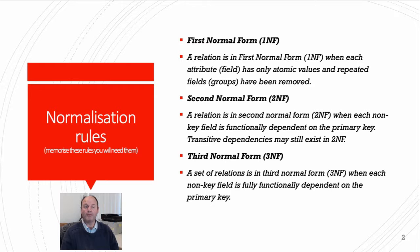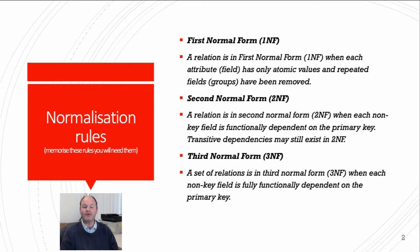Second normal form: a relation is in second normal form, or 2NF, when each non-key field is functionally dependent on the primary key. Transitive dependencies may still exist in second normal form. Third normal form, or 3NF: a set of relations is in third normal form when each non-key field is fully functionally dependent on the primary key. And as we go through this video, we'll be explaining these rules to you.